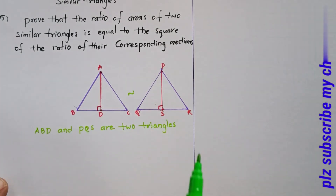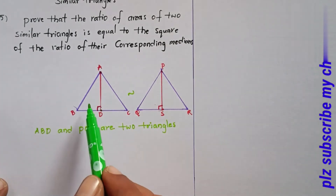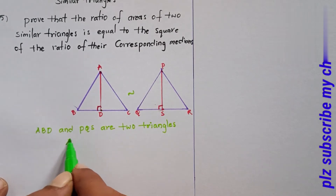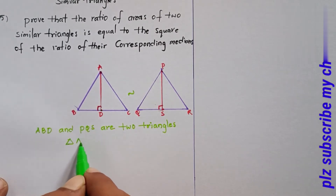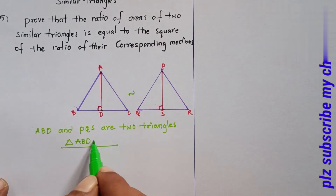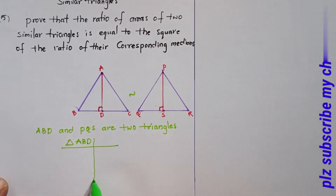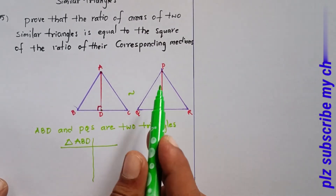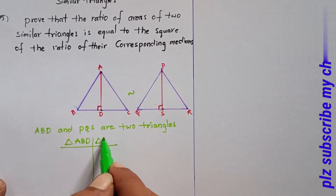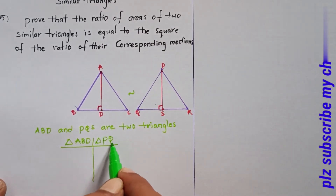Now compare these two triangles. We will consider triangle PQS alongside triangle ABC.